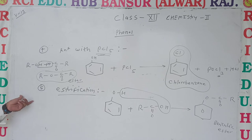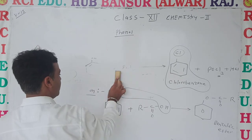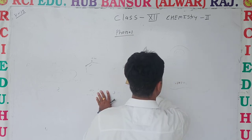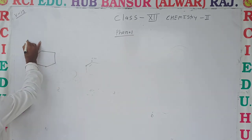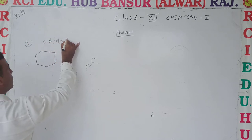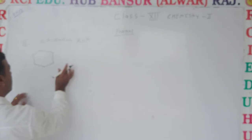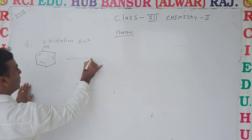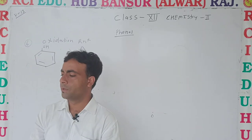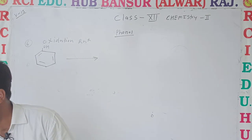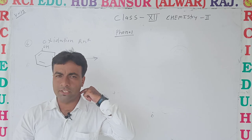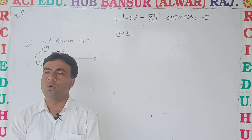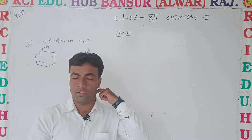That was a very easy reaction. The next reaction is a very important one — that is the oxidation reaction. Reaction number 6 is the oxidation reaction. Phenol reacts in the presence of chromyl chloride, which is an oxidizing reagent, and the major product formed is benzoquinone. This is called the oxidation reaction of phenol.